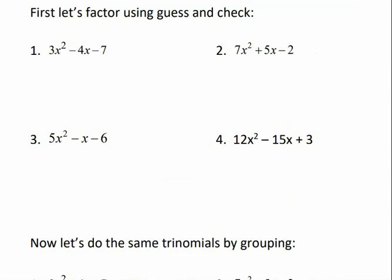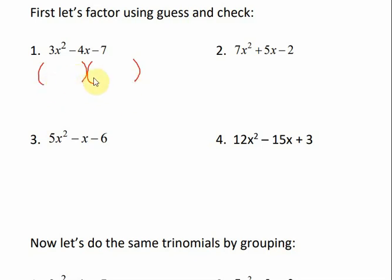We're going to start out with the guess and check method. Anytime you factor a trinomial, the answer should be two binomials. Whatever goes in the first two spots must multiply to give the first term, and whatever goes in the last two spots must multiply to give the last term. We're going backwards from FOILing — the inner and outer products must add or subtract to give the middle term. It's called guess and check because we plug things in, check it, and reorder or use different factors if needed.